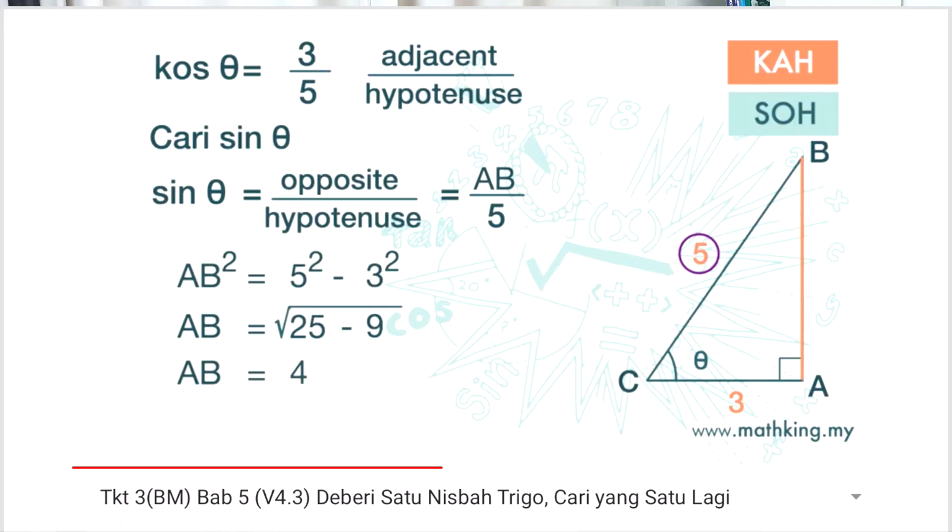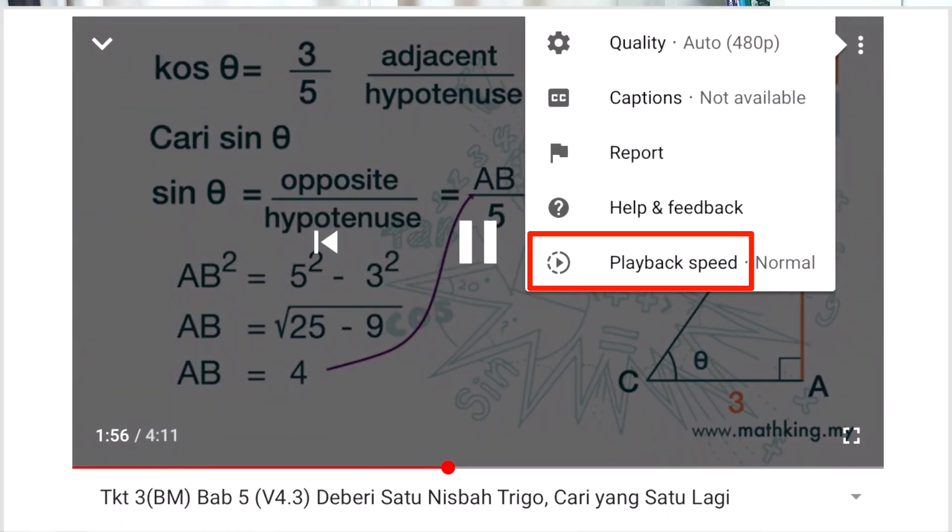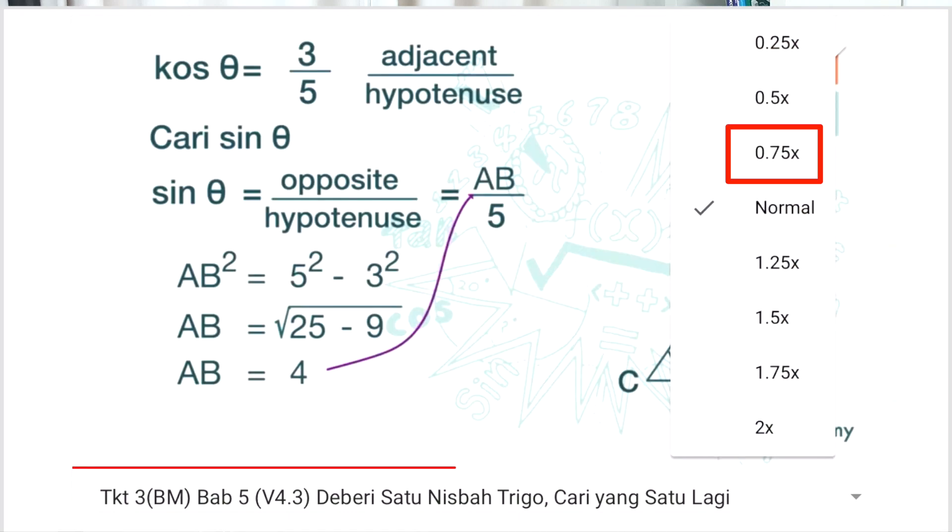Finally, if you find the videos too fast to catch up, you can always change the speed. For example, set it to 75% of the original playback speed. This should help you a lot if you are someone who learns a bit slowly. So tip number one: you control the videos. Rewind if you don't understand what is being taught, pause if you need time to think about certain points, and change the speed if needed.